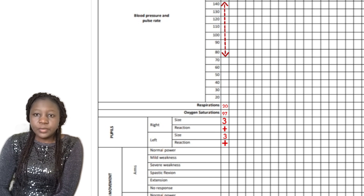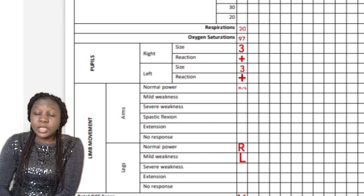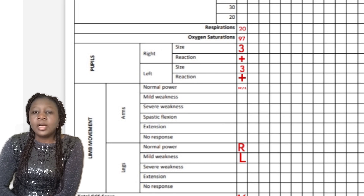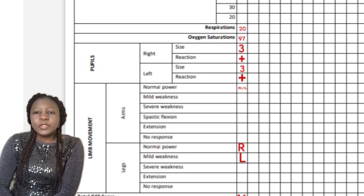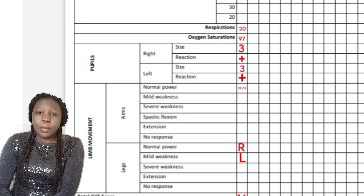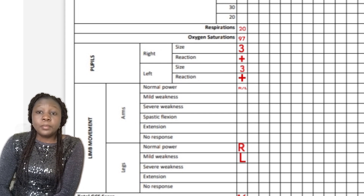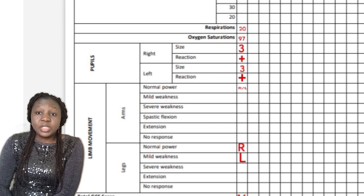The next section is checking for strength — checking for power in the hands and legs of your patient. You can ask the patient to stretch forth their hands, place your own hands over the patient's hands, and ask them to resist your hand. If they are able to resist with enough strength, that means they have normal power for both the right hand and the left hand. In the box in front of normal power, put capital letter R slash L.